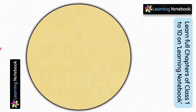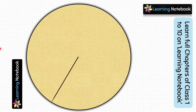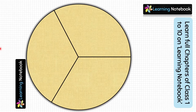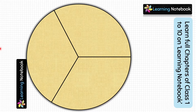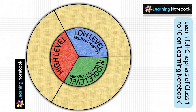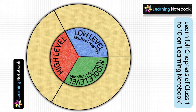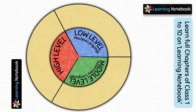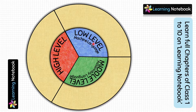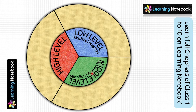Now take the yellow circle and divide it into three equal parts by making angles of 120 degrees each. Place the white circle on top of the yellow circle and make sure to match their centers. Now let's write about the three types of computer languages.